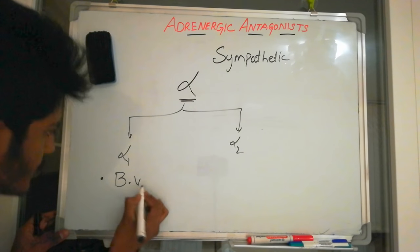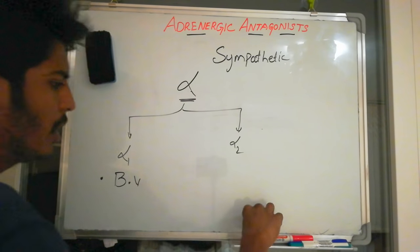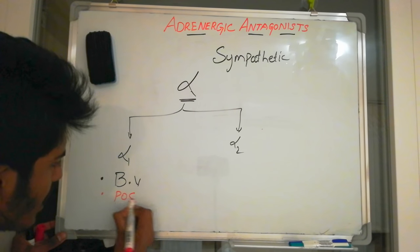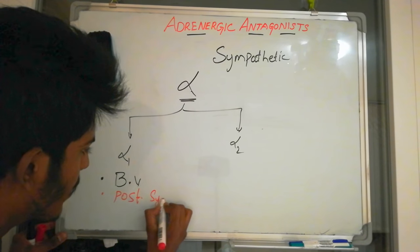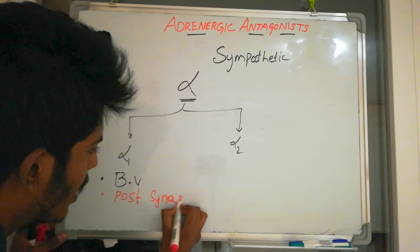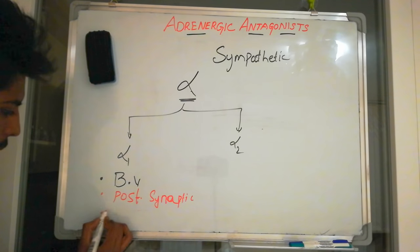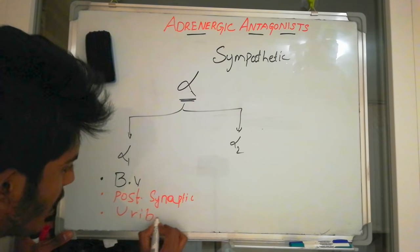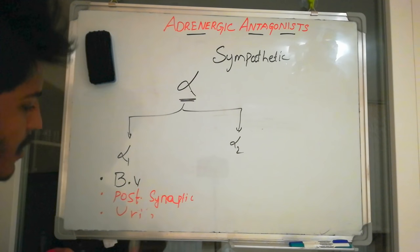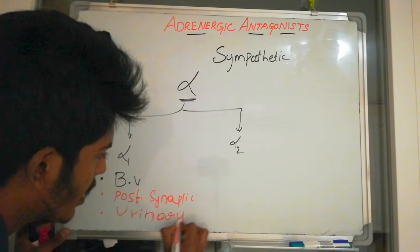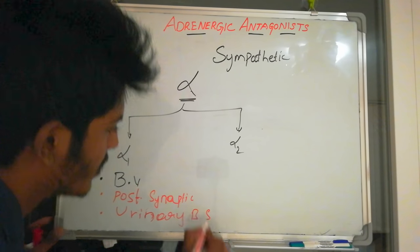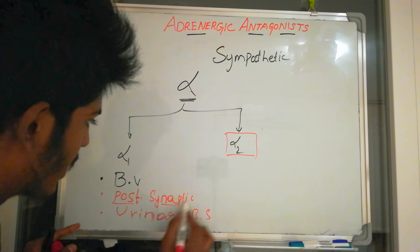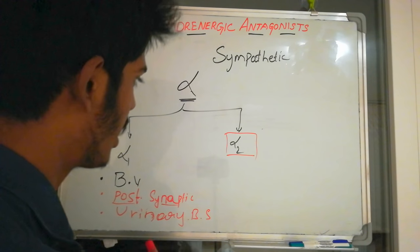Alpha 1 receptors are located in the blood vessels, and also in the post-synaptic membrane of the sympathetic nervous system. They are also located in the urinary bladder — specifically in the sphincter of the urinary bladder. Alpha 2 adrenoreceptor location will be explained when discussing the synaptic structure.